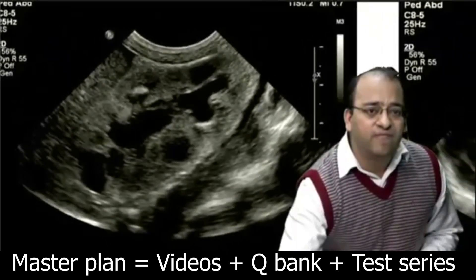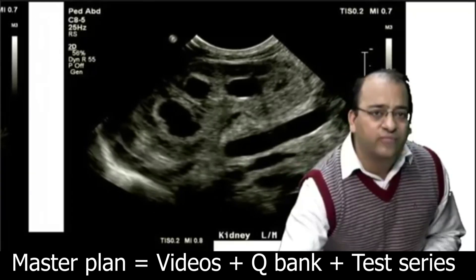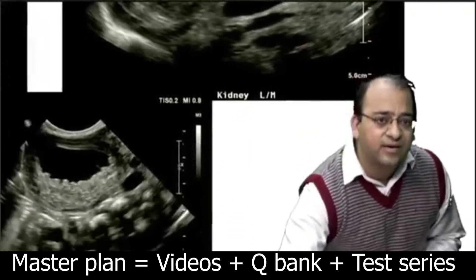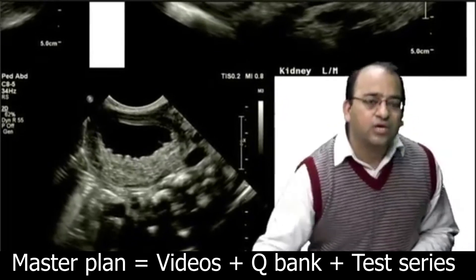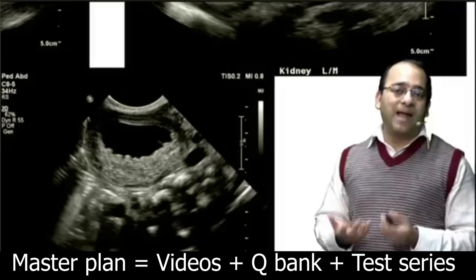This is the left kidney showing severe hydronephrosis. You can see the calices here, and if you look here you can appreciate this child has very thick wall bladder.